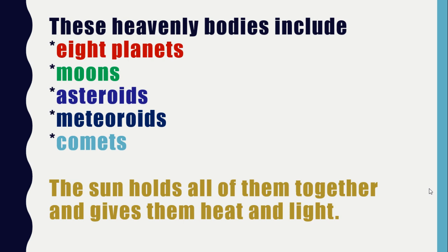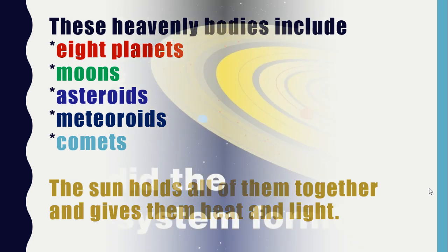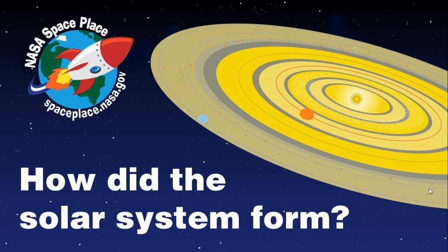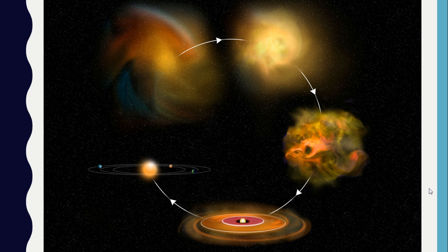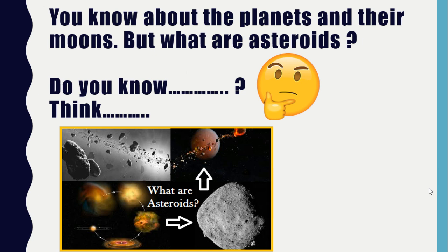The Sun holds all of them together and gives them heat and light. Do you know how the solar system formed? The solar system was very different millions of years ago. It was a very hot place that had only gas and dust. Over time it cooled, and rocks and ice were formed. The rocks joined to make rocky planets like the Earth, while the ice formed the icy planets like Neptune.